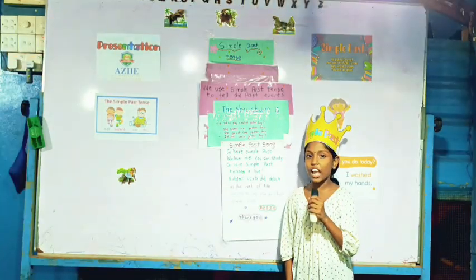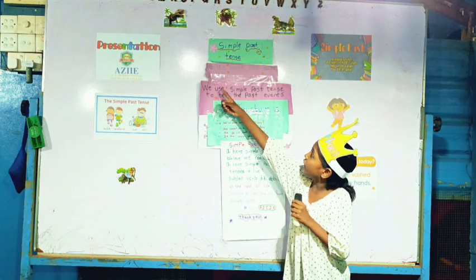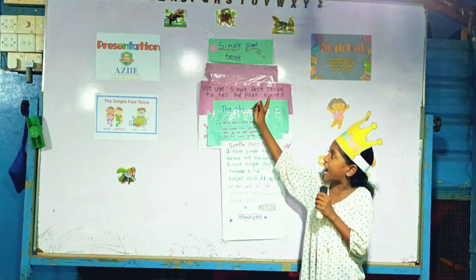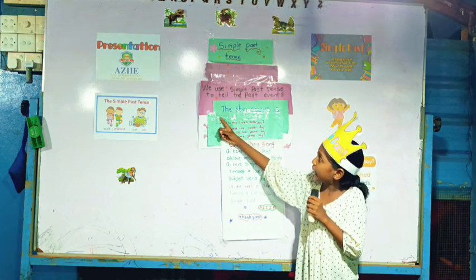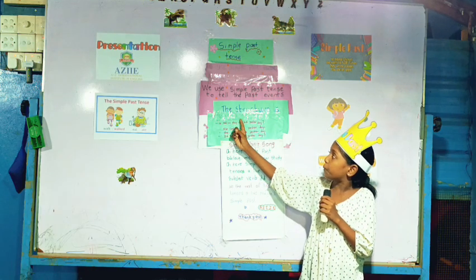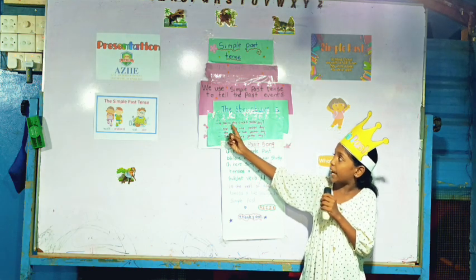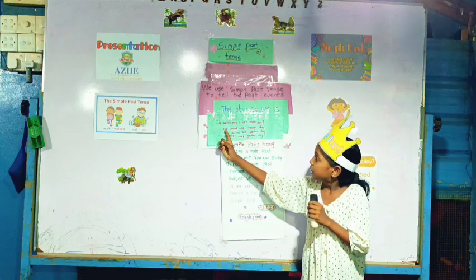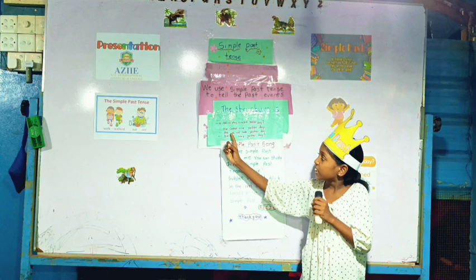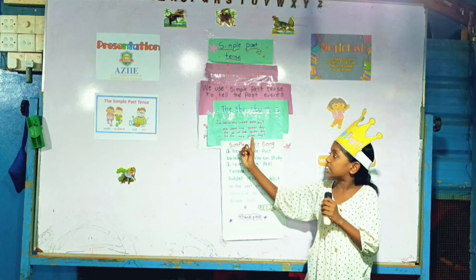Good evening everybody. Today I am going to tell about simple past tense. We use simple past tense to tell the past event. Example: He played cricket yesterday. He did not play yesterday. Negative question: Did he play cricket yesterday? He took rice yesterday. He did not cook yesterday. Did he cook yesterday?